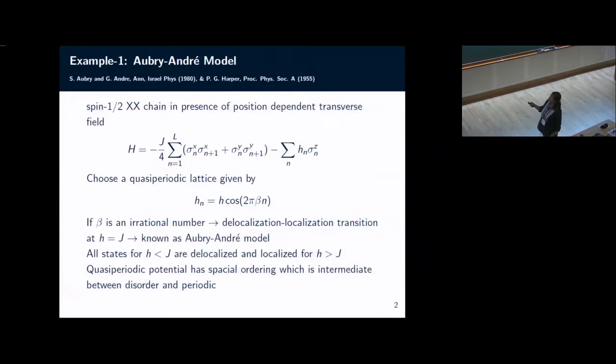For example, the first example that I am taking is this Aubrey-Andre model, which is a well-studied model. It is a spin-half XX chain in presence of this position-dependent transverse field. The transverse field is site-dependent and the dependence has this quasi-periodic term, h cos 2π beta n. If beta is an irrational number, then it can be shown that there is a transition from a completely delocalized eigenstate.